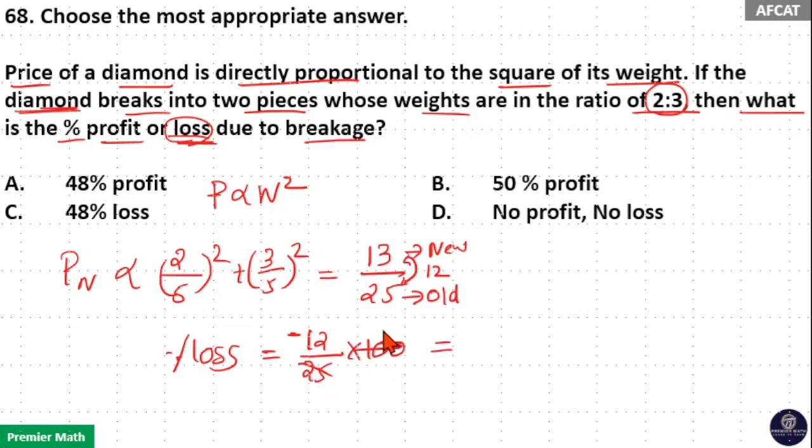25 goes 4 times in 100, so 12 times 4 equals 48 percentage. So if there is a minus, it's a loss. Therefore, option C is your answer.